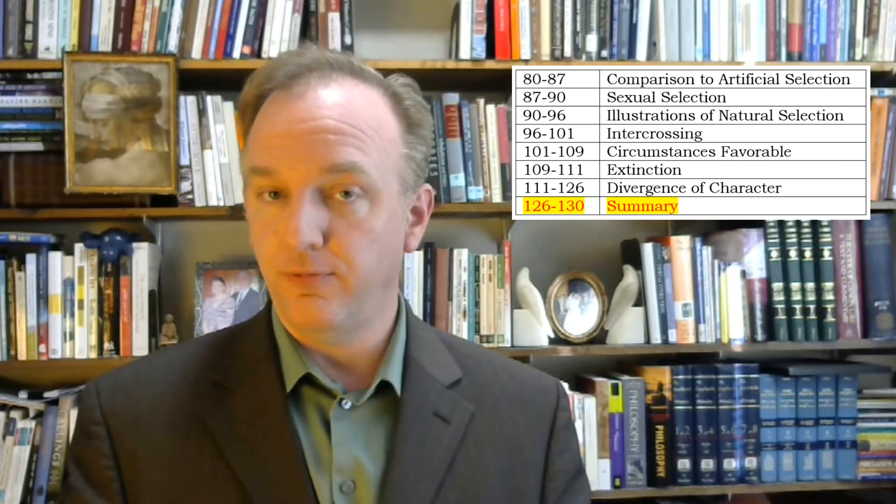The final section is three and a half pages long, and it's a summary of the entire chapter. The summary provides a good overview of Darwin's argument so far, and I urge you to read it carefully, both before and after you read the entire chapter.